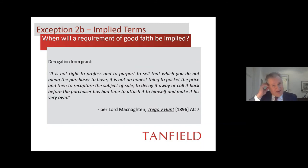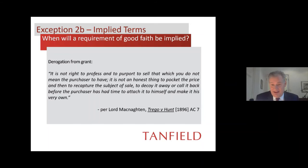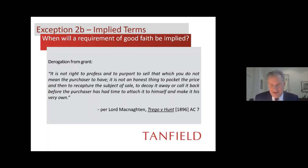In the first category — derogation from grant — this is the old case Trego v Hunt concerning the sale of a business which the vendor then attempted to wrest back from the buyer by holding on to the clients. Lord McNaughton said: it's not right to profess to sell that which you do not mean the purchaser to have. It's not honest to pocket the price and then recapture the subject of the sale. There was no express obligation preventing it, but it was held to be a derogation from grant.